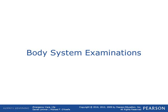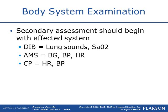Specific body system examinations: the secondary assessment should begin with the affected system. For difficulty breathing, focus on lung sounds, checking breathing and tidal volume adequacy, oxygen saturations, mental status, blood pressure, blood glucose, and heart rate. For chest pain, check heart rates and blood pressures. Tailor and get more specific to what's most affected.